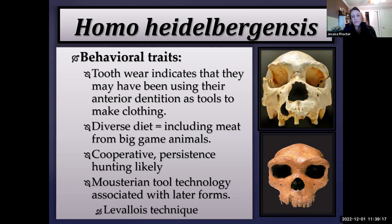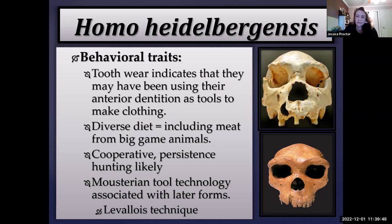Heidelbergensis utilized Middle Paleolithic tools called Mousterian. To think back: Homo habilis used the oldest stone tool technology, the Oldowan; by Homo erectus, tools were more refined — the bifaces or hand axes are called Acheulean. Then with heidelbergensis we get another level of sophistication — Mousterian tools — and they also used a technique called the Levallois technique. Overall we're seeing increases in cranial capacity, symbolism, cooperative hunting, control of fire, and migration out of Africa.